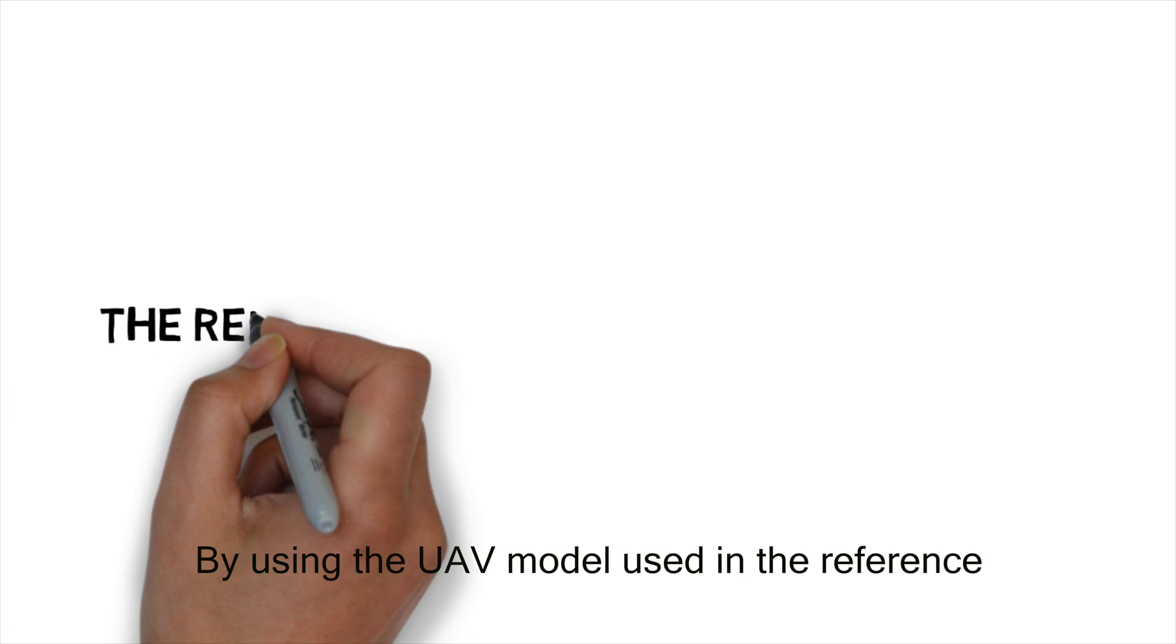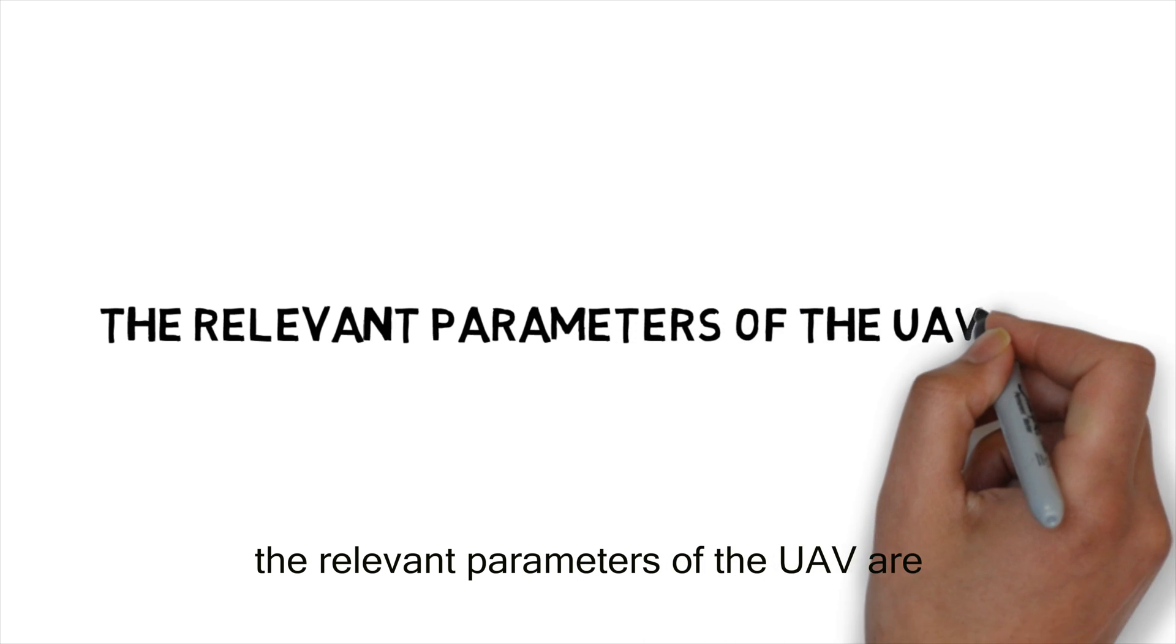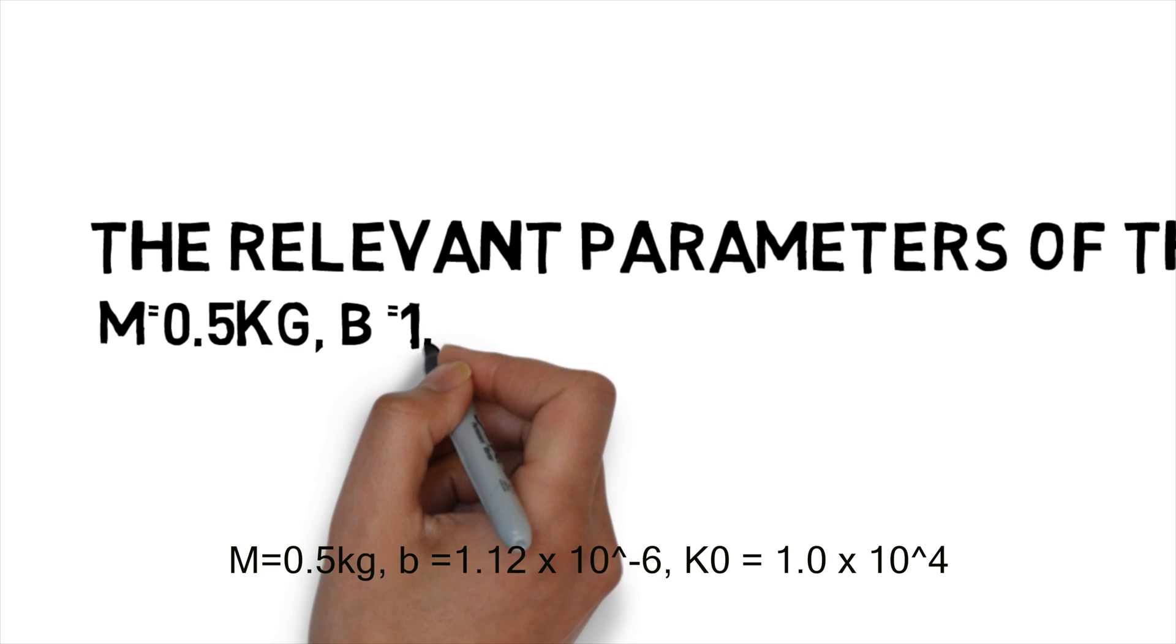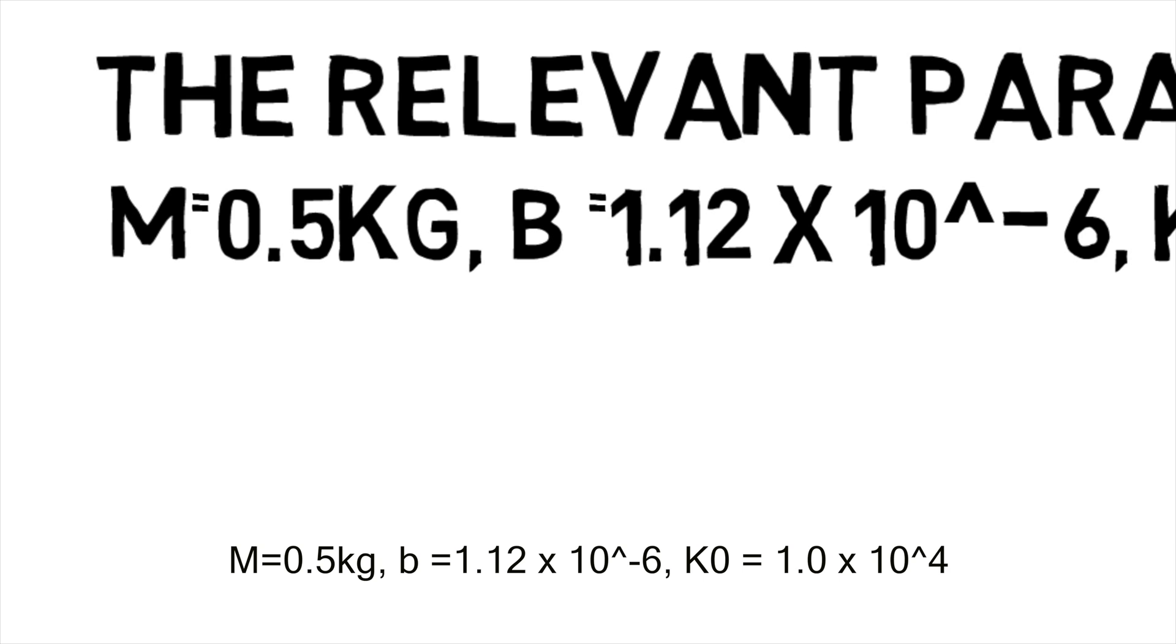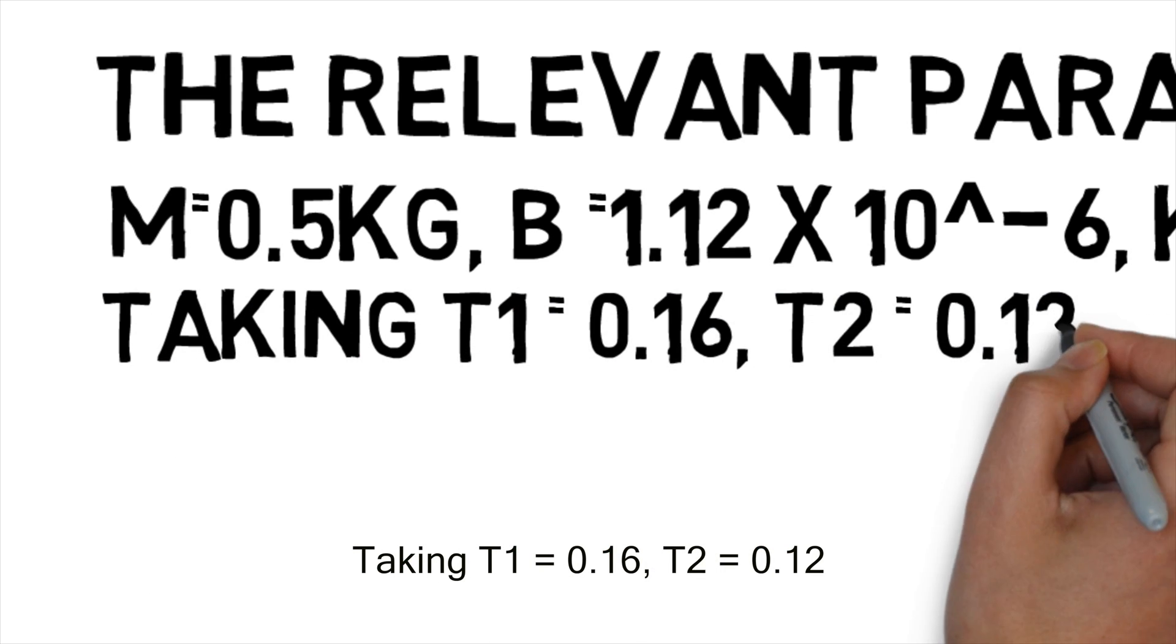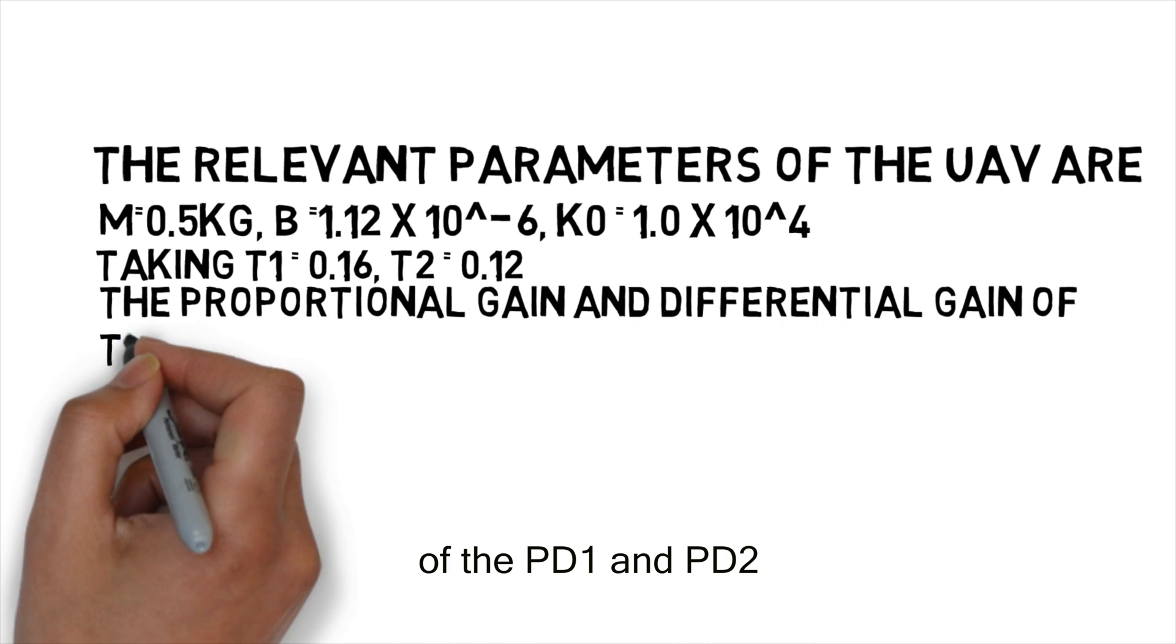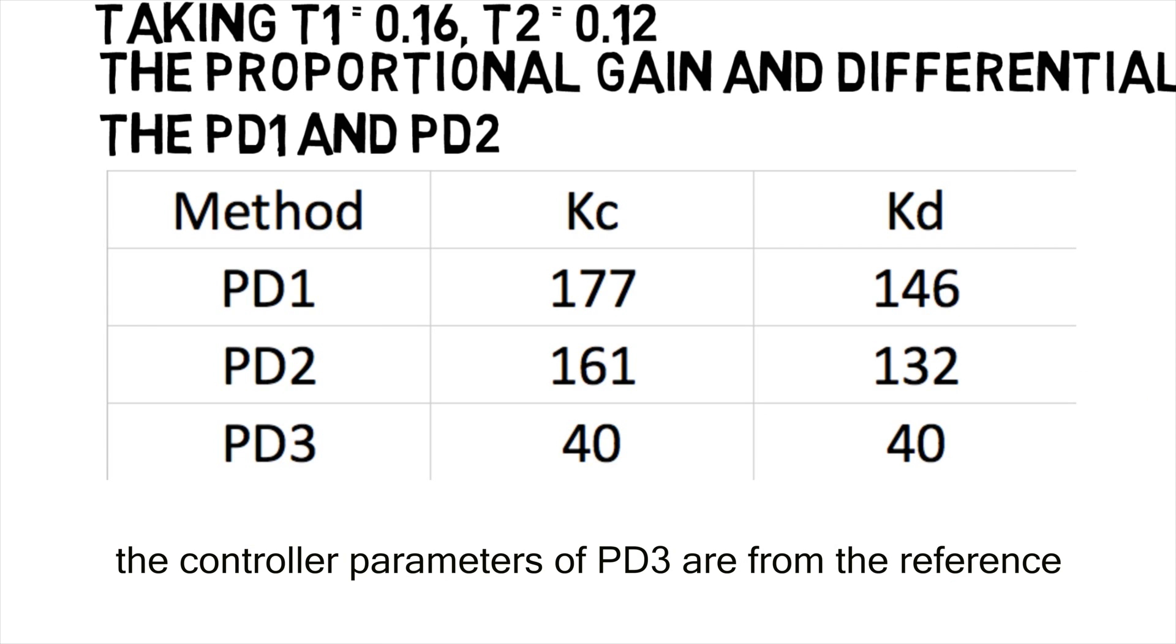By using the UAV model used in the reference, the relevant parameters of the UAV are M equals to 0.5 kg, b equals to 1.12 times 10 to the minus 6, k0 equals to 1 times 10 to the power of 4. Taking tau1 as 0.16, tau2 as 0.12, so we get the proportional gain and differential gain of the PD1 and PD2. The controller parameters of PD3 are from the reference.